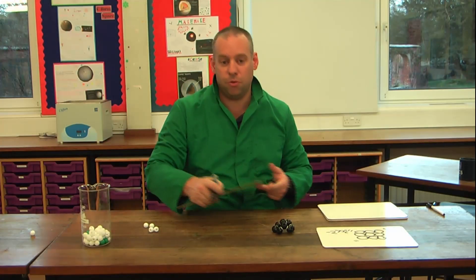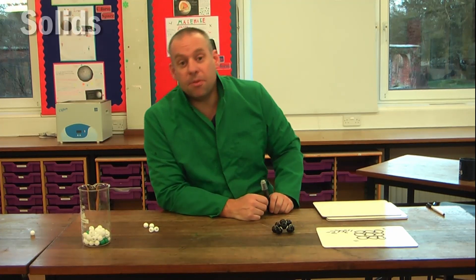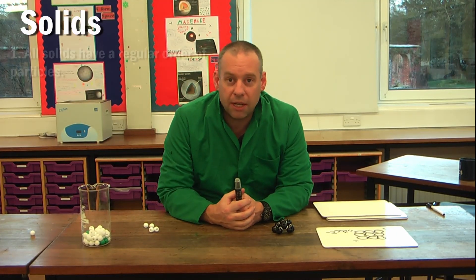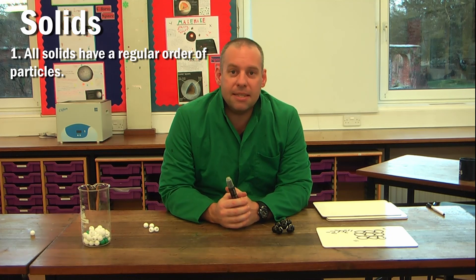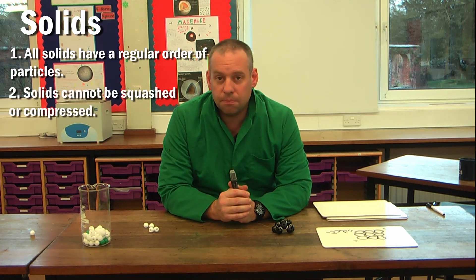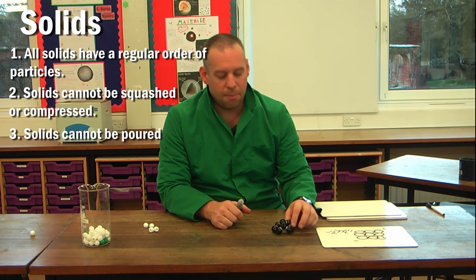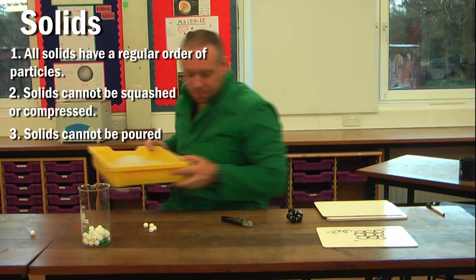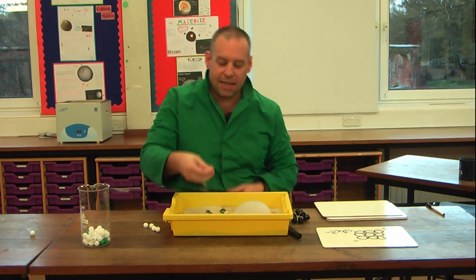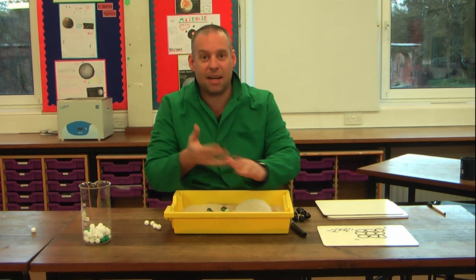So we've got a couple of definitions to use with solids. The three things are: all solids have a regular order of particles; you cannot squash or compress a solid; and you cannot pour a solid. To give an example, if I try to pour this, the particles can come off. Here's a quick question though: sand is a solid, and yet if I take the sand here, it appears to pour. Why can sand pour even though it's a solid?